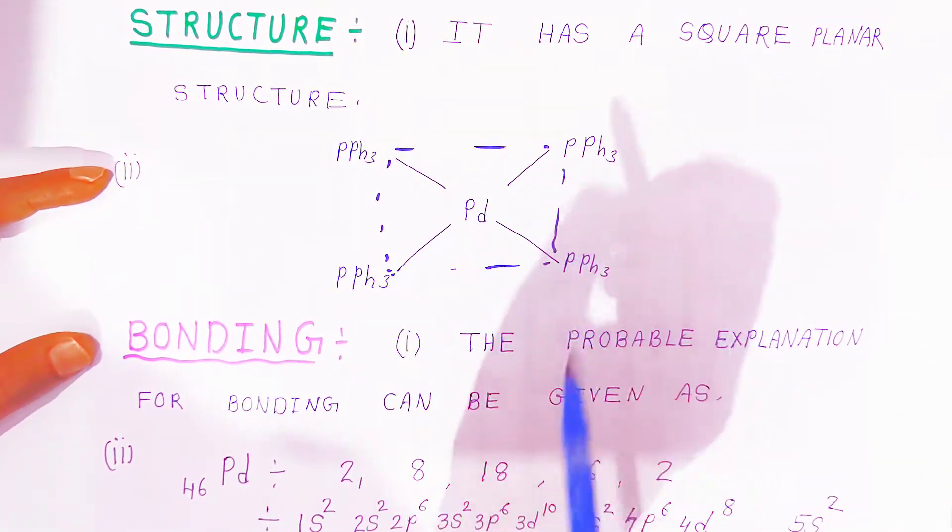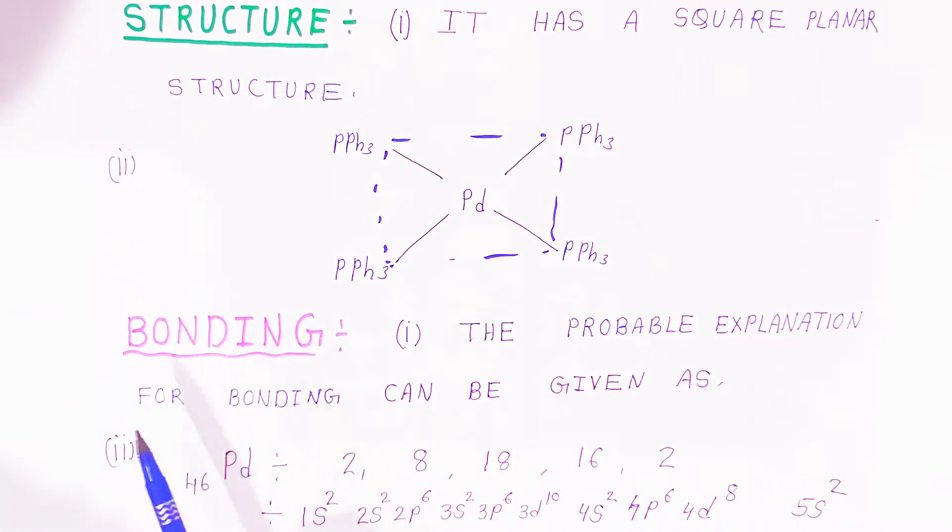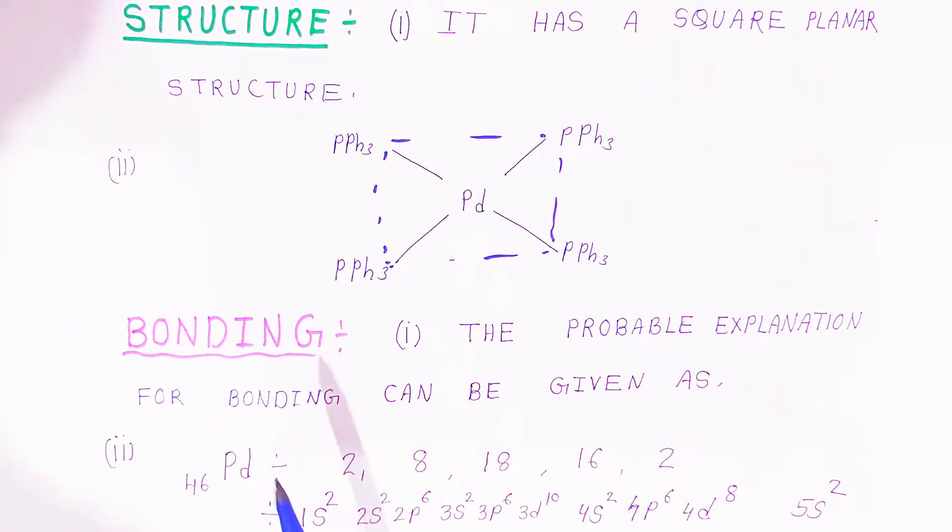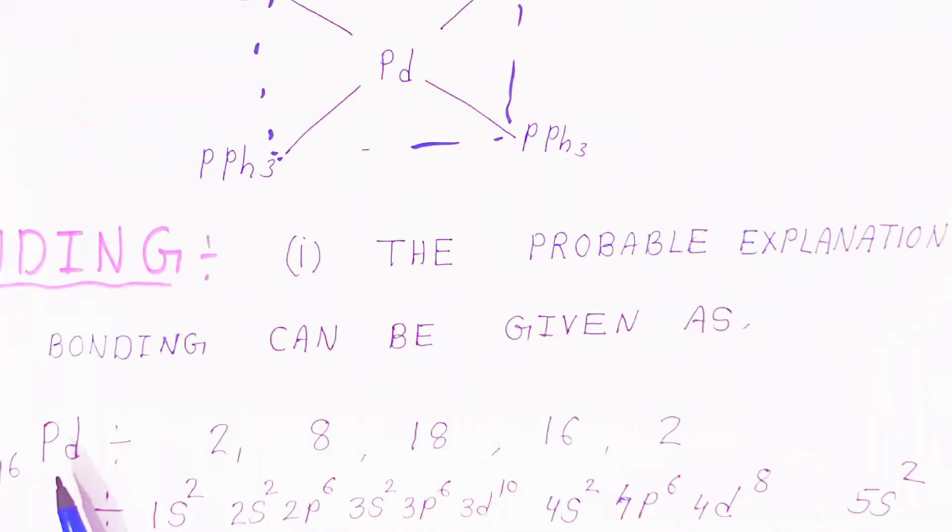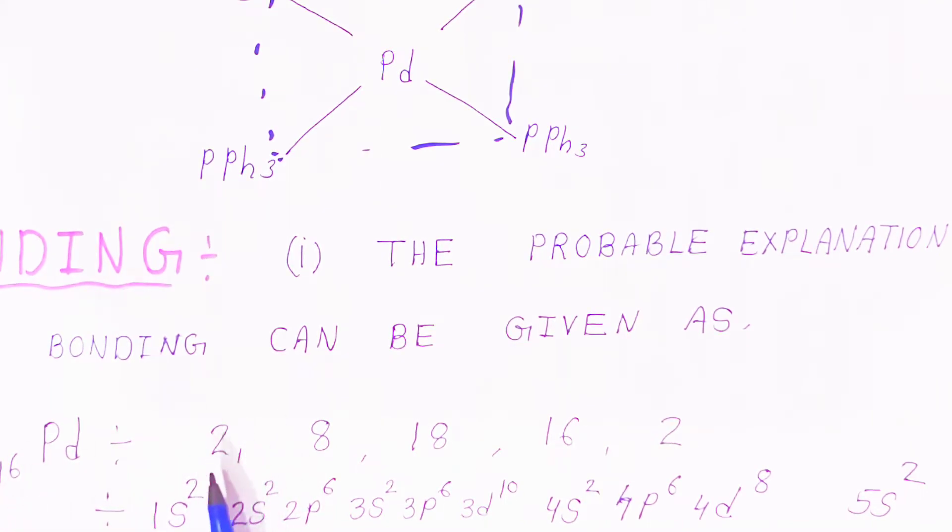Now when talking about the bonding, the probable explanation for bonding can be explained as follows. To explain the bonding you should know the electronic configuration of palladium. The atomic number is 46, so the ground state electronic configuration is 2, 8, 18, 16, 2.